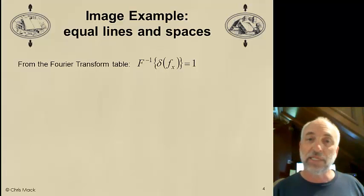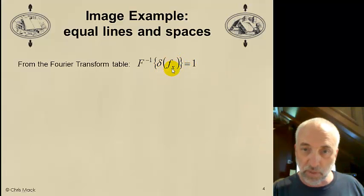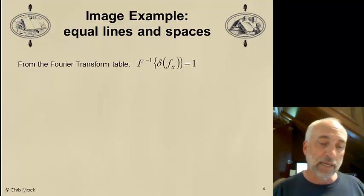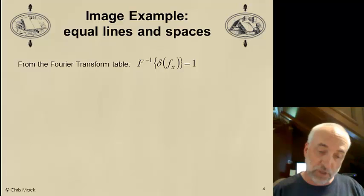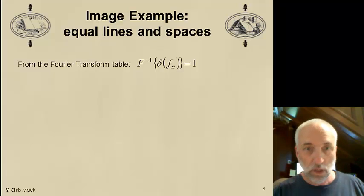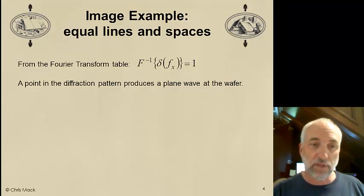We can go look up the answers. And, in the last set of lecture notes, I provided you with a table of Fourier transforms. And you see that there's a Fourier transform pair between a delta function and 1. In other words, if I take the inverse Fourier transform of the delta function at a spatial frequency of 0, I get 1. In other words, I get a plane wave. Delta function is a point of light.